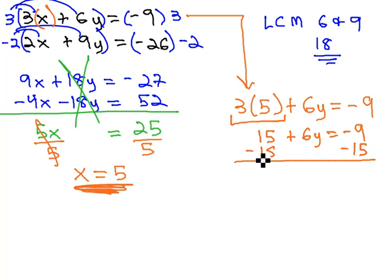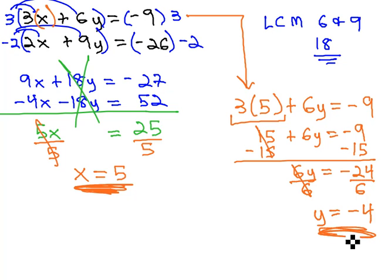Subtracting 15 from both sides gives us 6y equals negative 24, and dividing by 6 tells us that y is equal to negative 4.